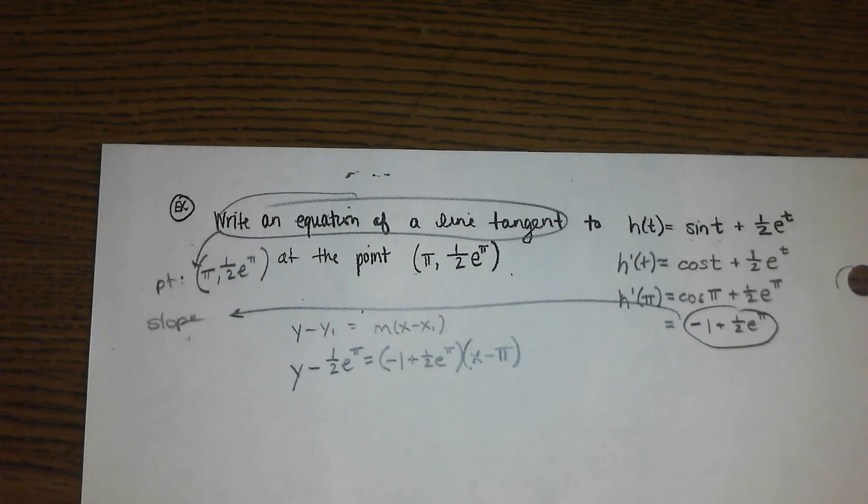And then x minus the x-coordinate of pi. And if you wanted to, you could distribute, foil these out, and add your half e to the pi power over. I don't think it's going to do much for us. It's going to probably make it equally as ugly.